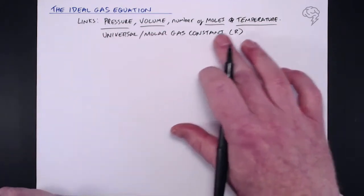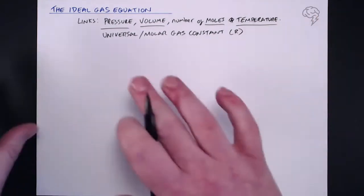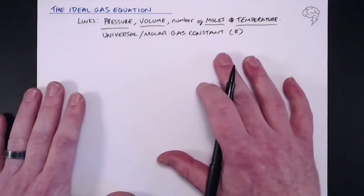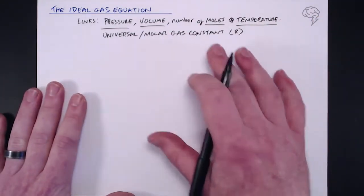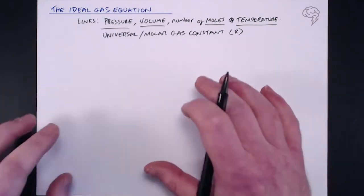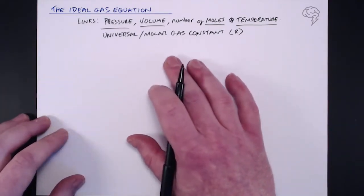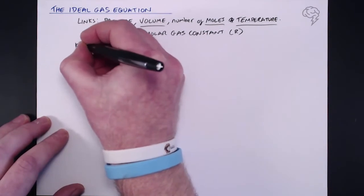So this gas constant allows us to link all of these things together and show us how changes in pressure and volume and number of moles affect the temperature, and of course vice versa. So all these five things are linked together. And before we look at the actual equation, there are a couple of assumptions that this ideal gas equation makes.